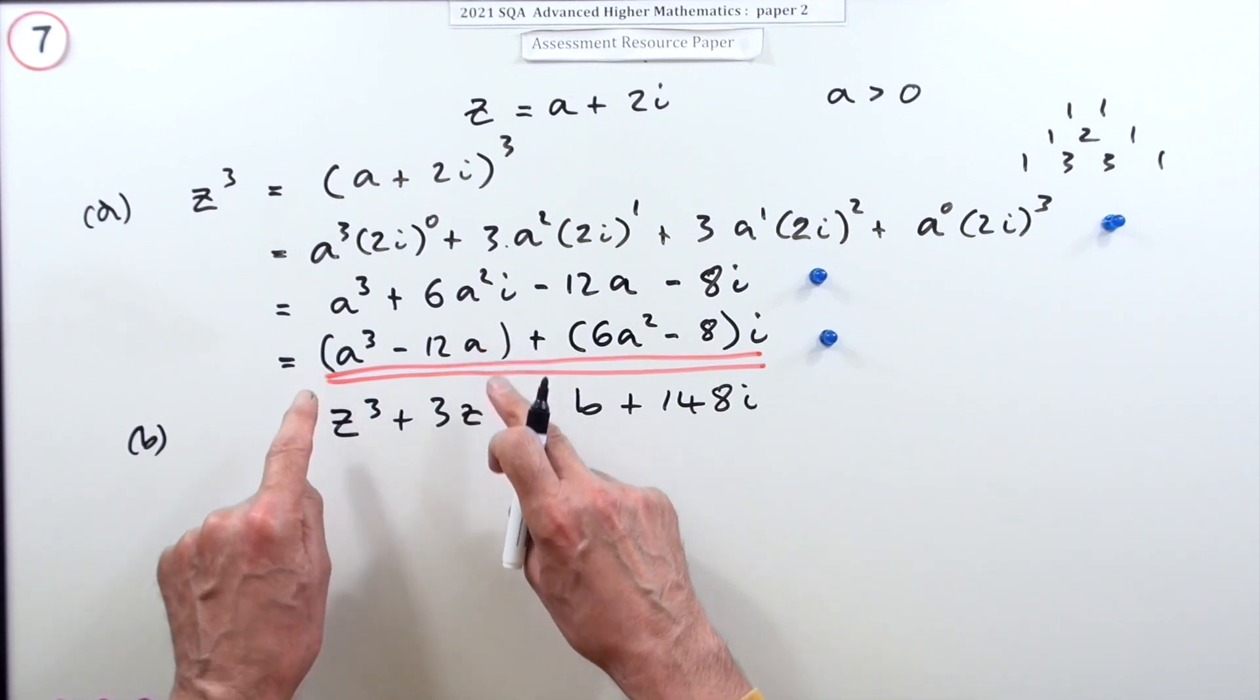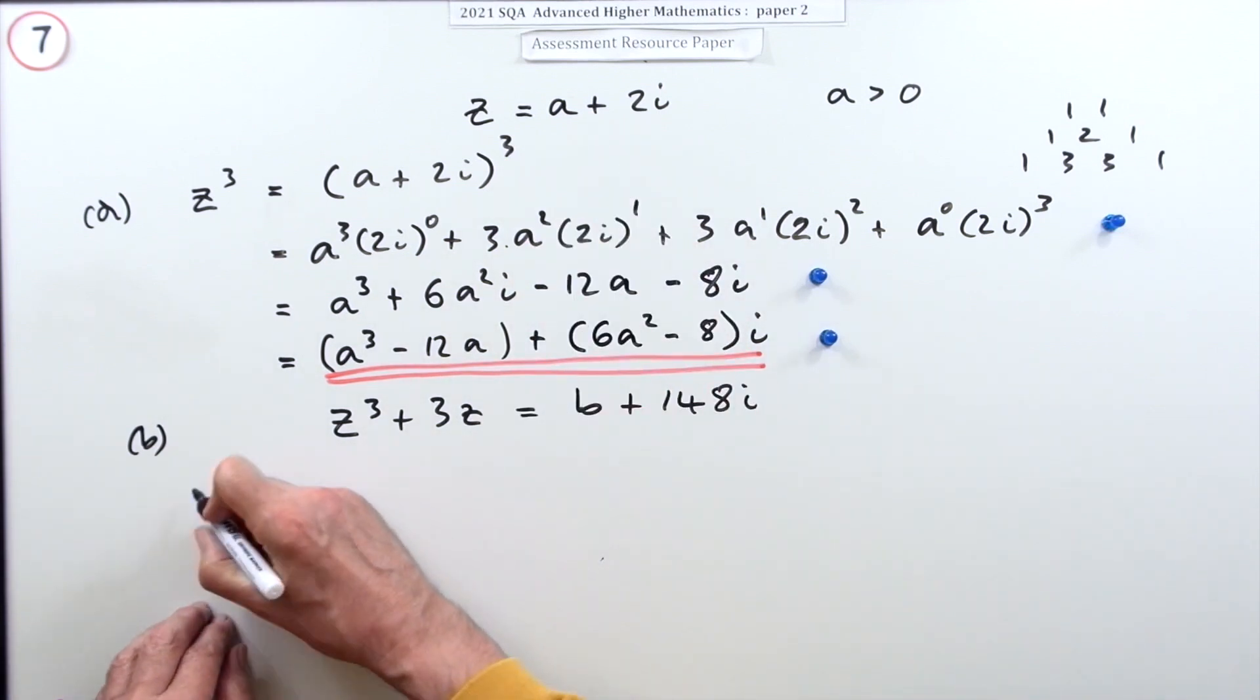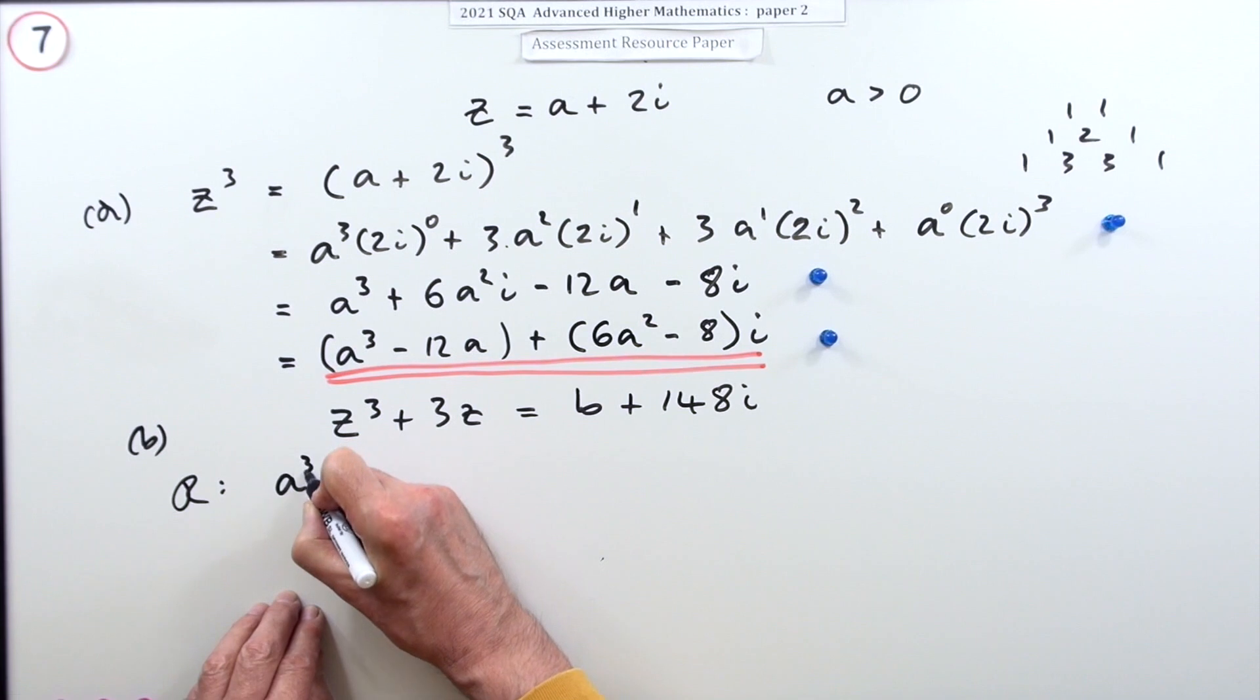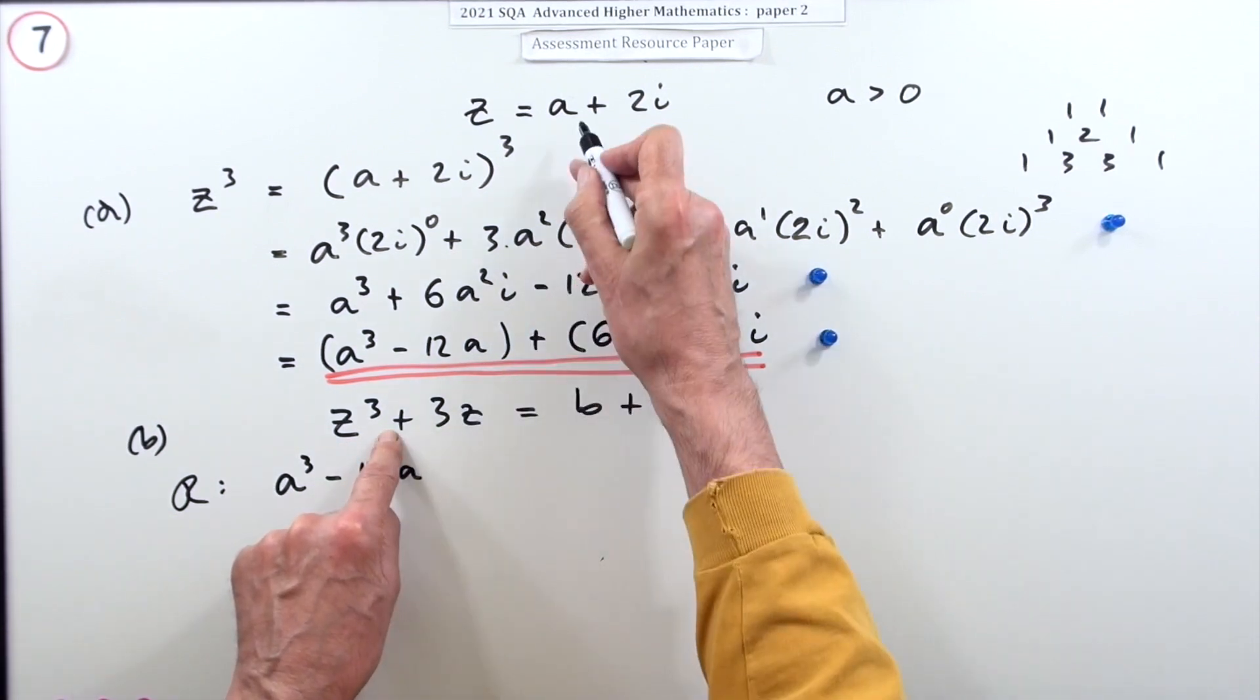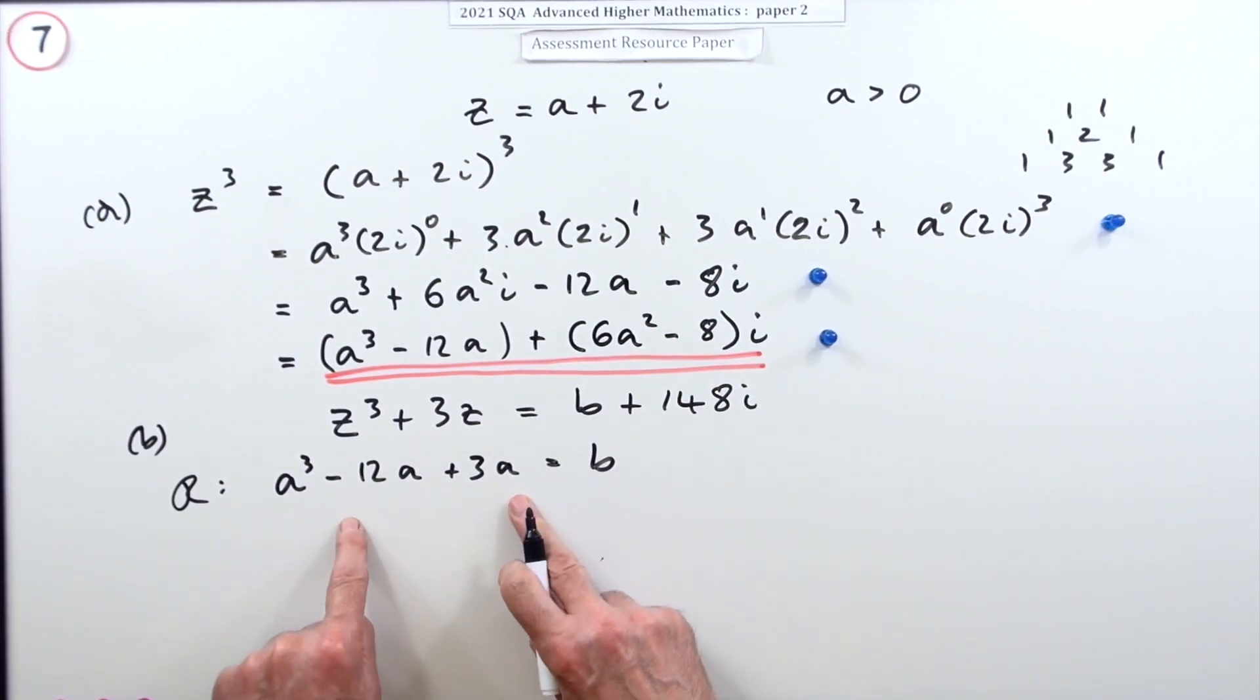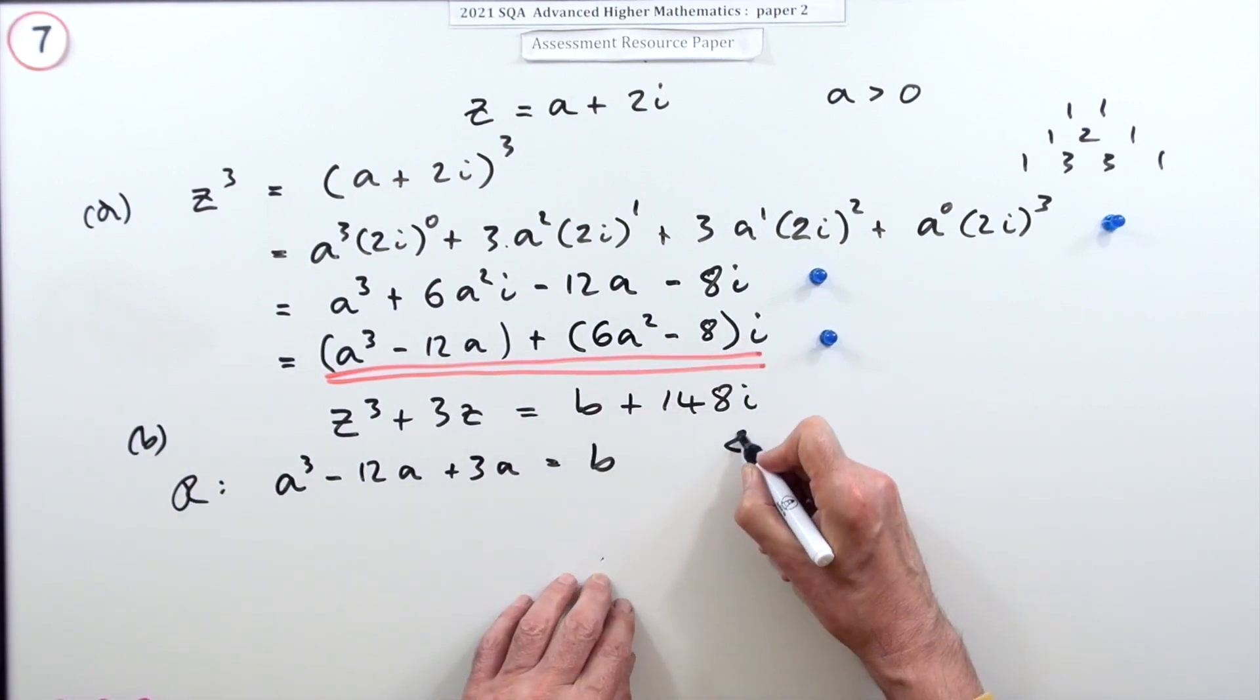Taking the real part: the real part of z cubed is a cubed minus 12a, plus three times the real part of z is 3a, and the real part of the right side is b. You can see straight away that's not going to be useful right now because there are no numbers, so let's take the imaginary parts.